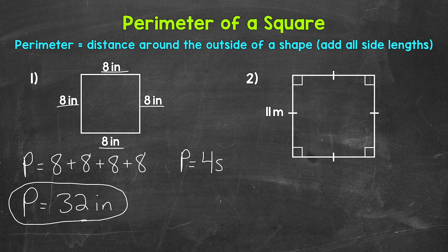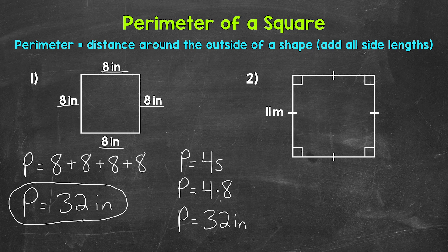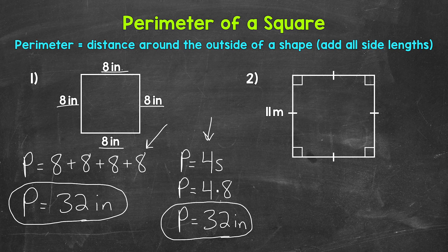For this square, each side is 8 inches, so let's plug in 8 for s. So 4 times 8 is 32. The perimeter equals 32 inches that way as well. For the perimeter of a square, we can either add all of the sides, or we can multiply a side length by 4. Either way will work.